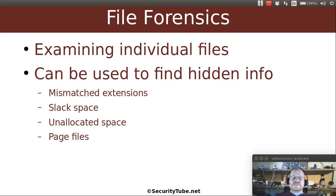These techniques that we're going to discuss can be used to find hidden information, including things that are hidden in mismatched file extensions. In the Windows system, Windows is pretty dumb about handling files. If you use something like Linux or OS X, it knows what a file is by looking at the file itself, whereas Windows relies completely on the file extension to determine what kind of file something is. I can just change the file extension and it will appear as though a file is corrupted. This is a very common way of hiding information.